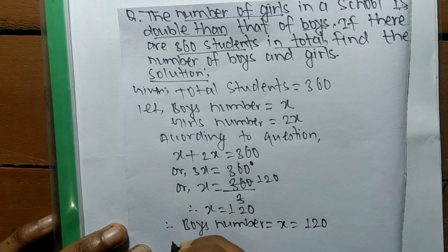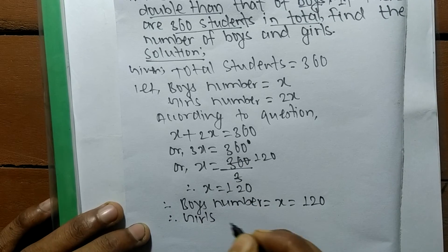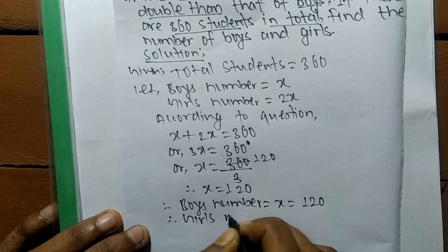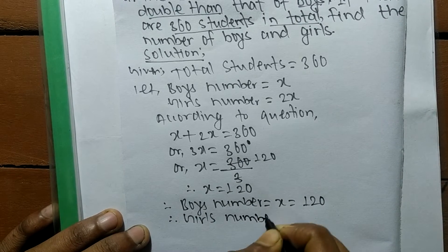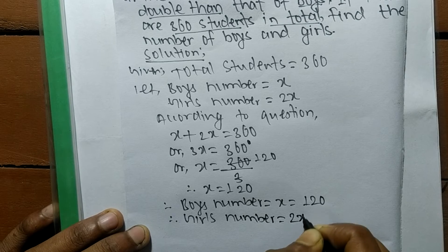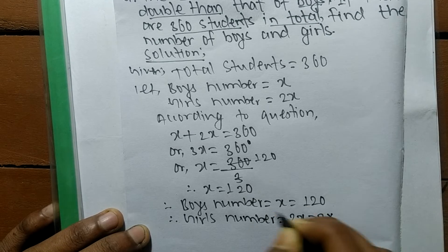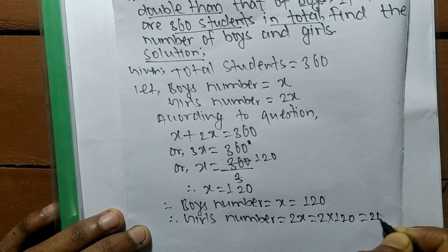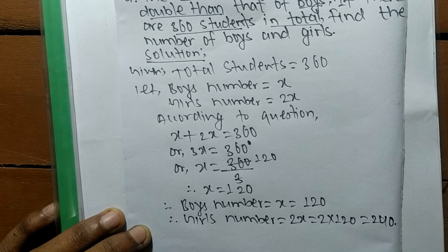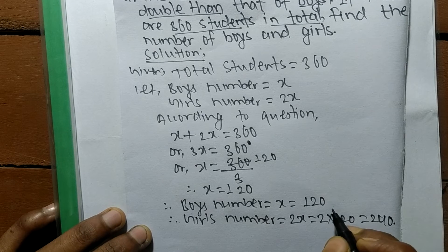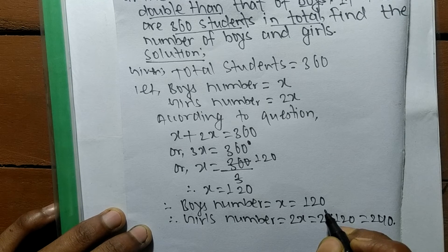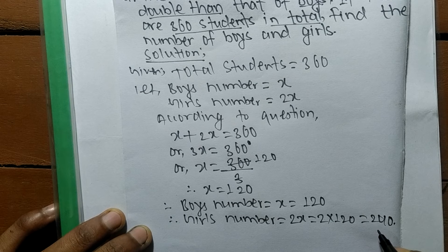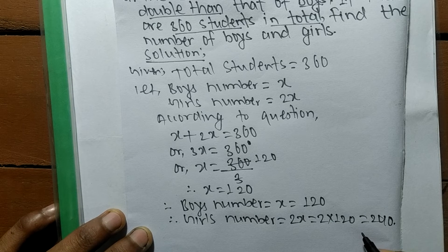Since X represents the number of boys, therefore the number of boys is X, which is equal to 120. In the same way, the number of girls is equal to 2X, meaning 2 multiplied by 120, which is equal to 240.